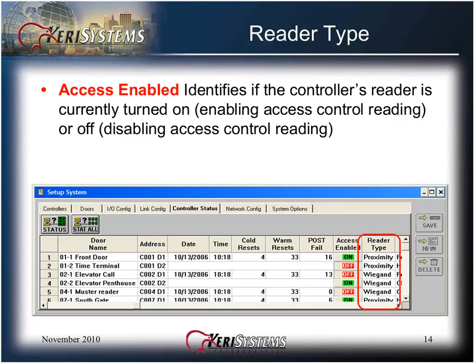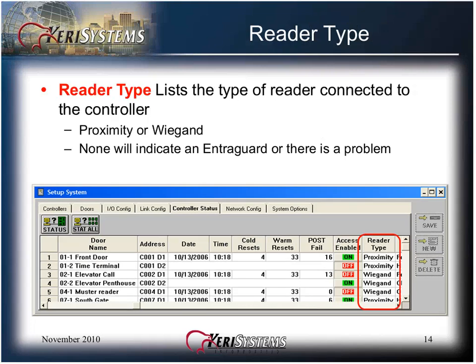The reader type column lists the type of reader connected to the controller — proximity or Wiegand — and none will indicate an entry guard, telephone entry unit, or that there is a problem with that reader and controller communication.